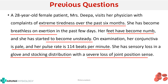In this question, apart from the normal features of anemia, we have got some other features also — like the feet have become numb, she has become unsteady, and she has got sensory loss in the glove and stocking distribution with severe loss of joint position sense. So this would be the picture of megaloblastic anemia, where you will have neurological symptoms along with cardiovascular symptoms.